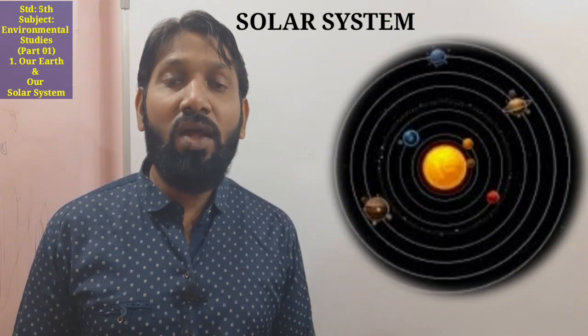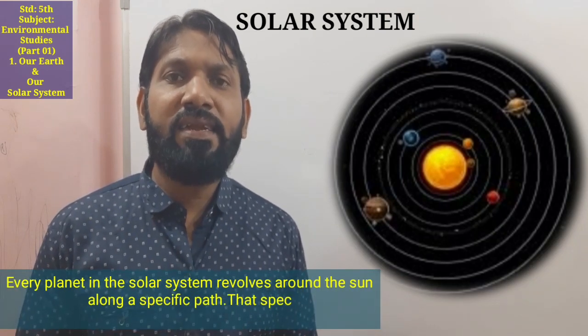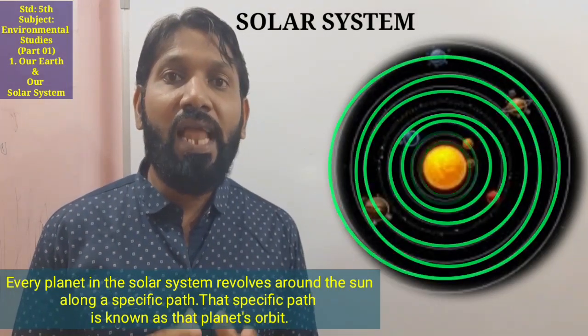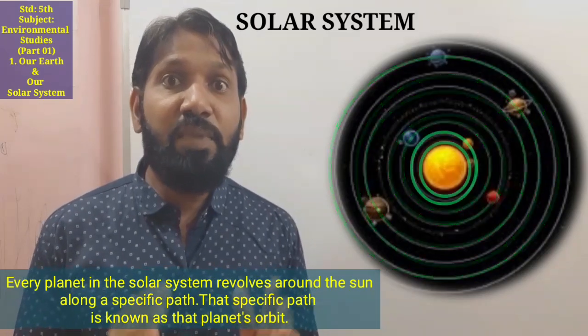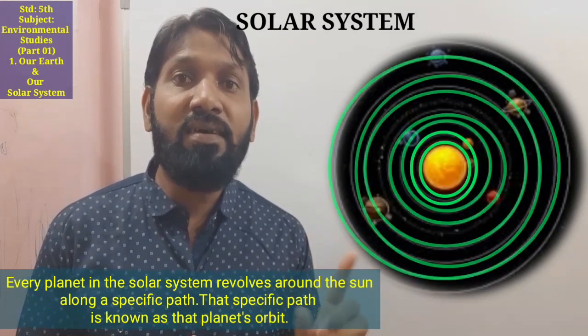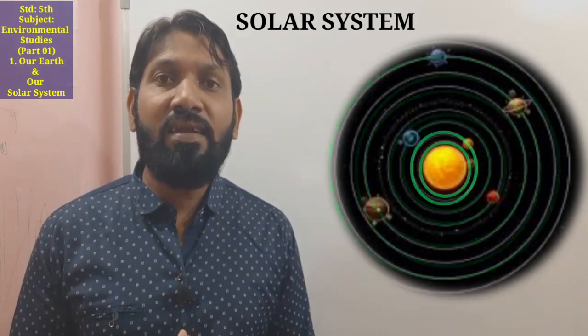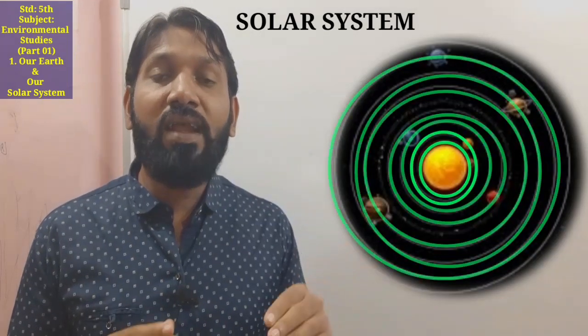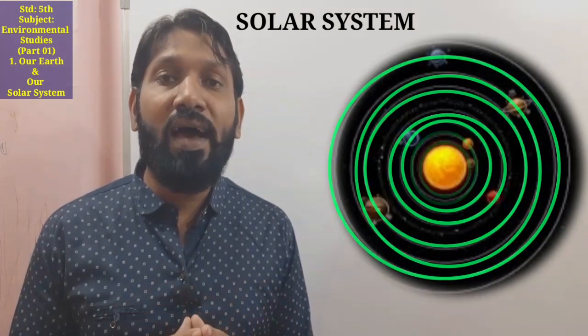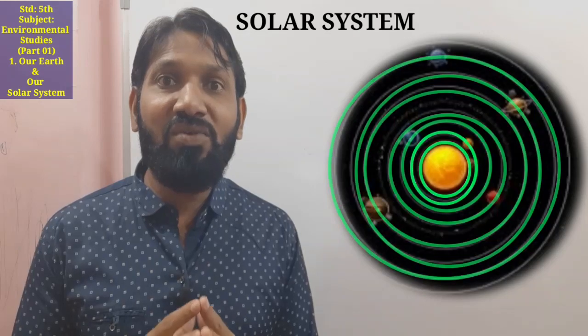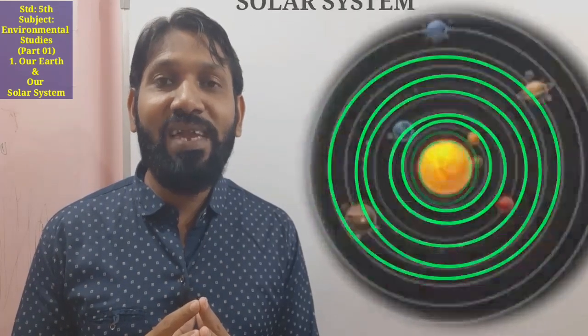All these planets revolve around the sun. Every planet revolves around the sun along a specific path, and that specific path is called that planet's orbit. The sun, which is a star, and all the planets which revolve around it — all together — is called our solar system.